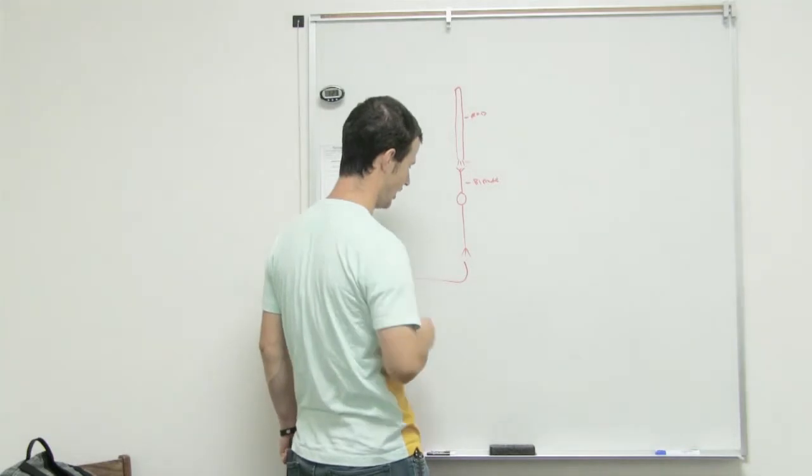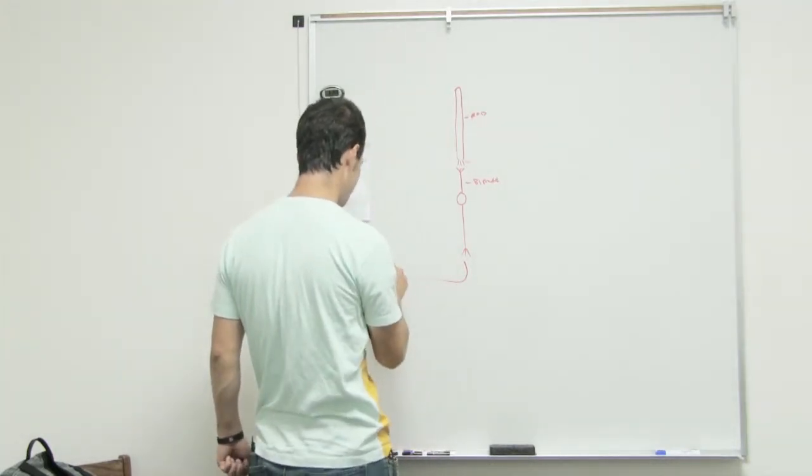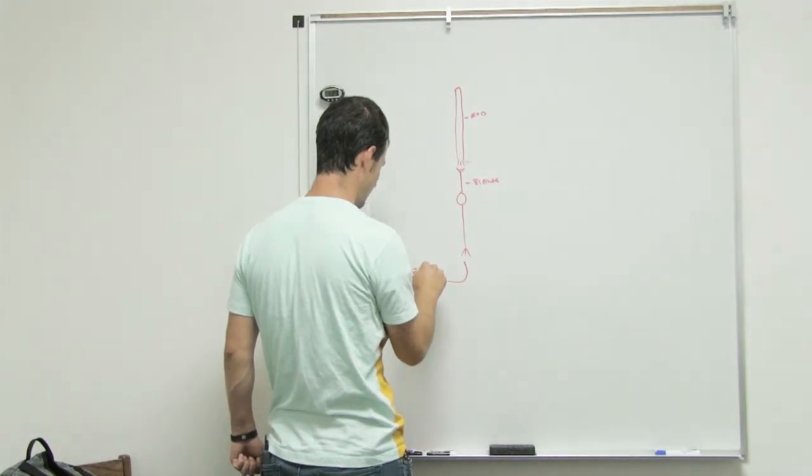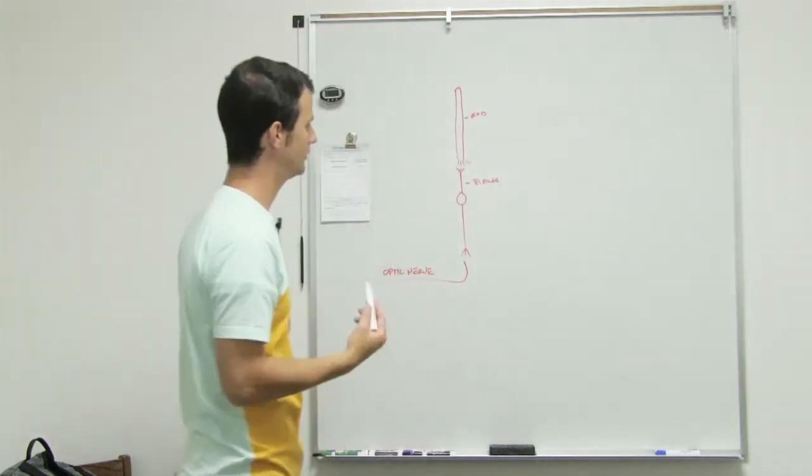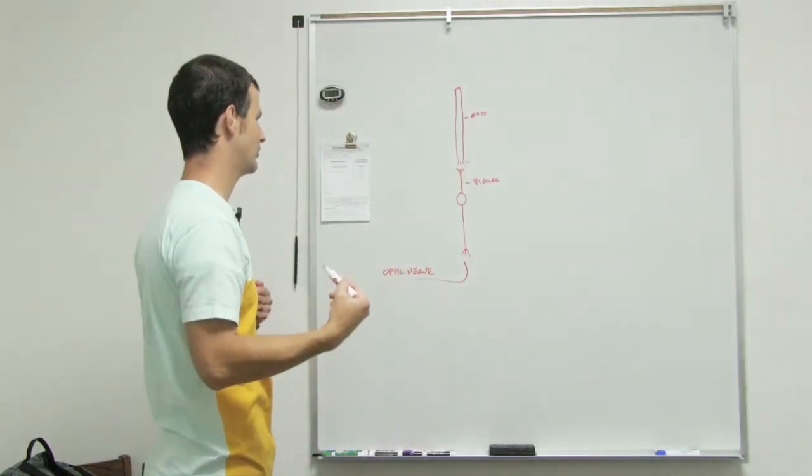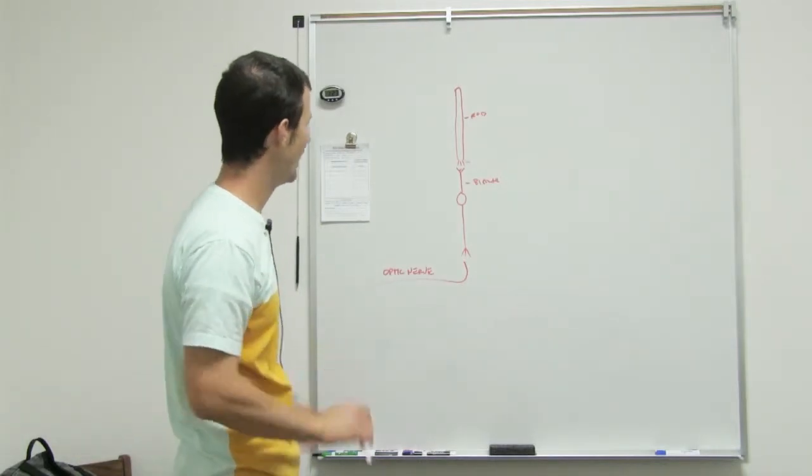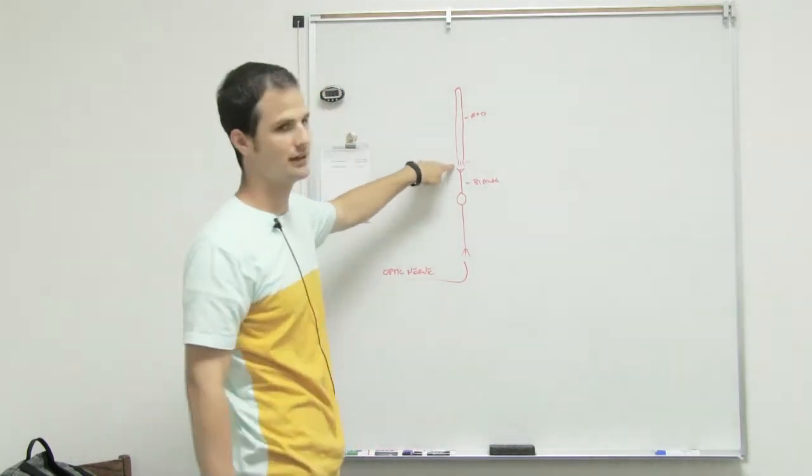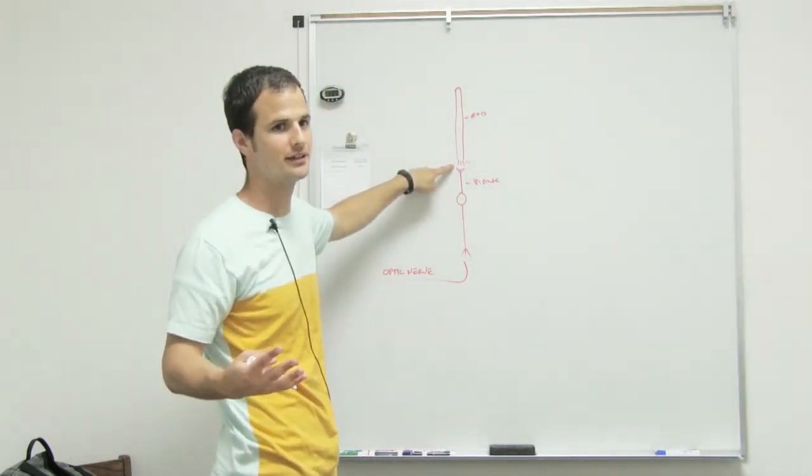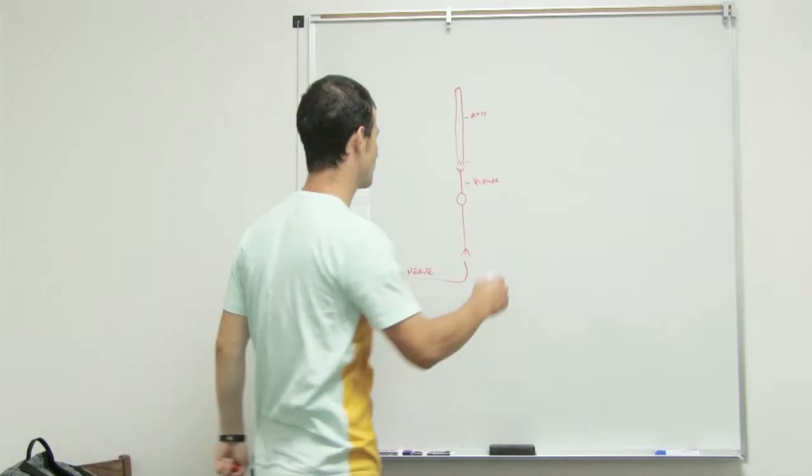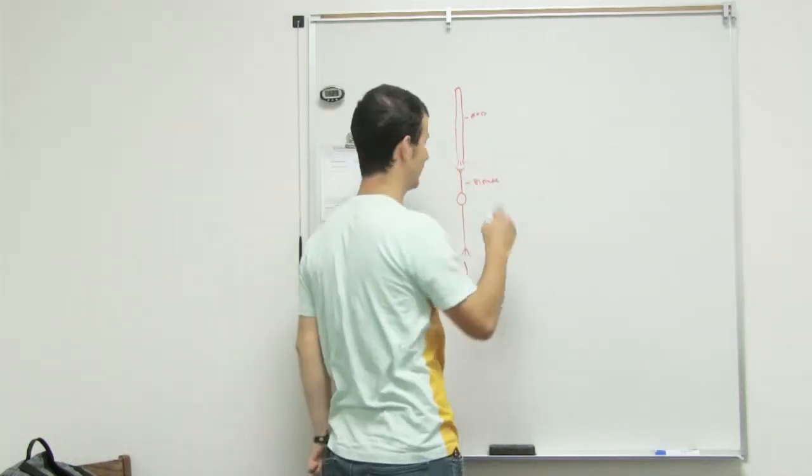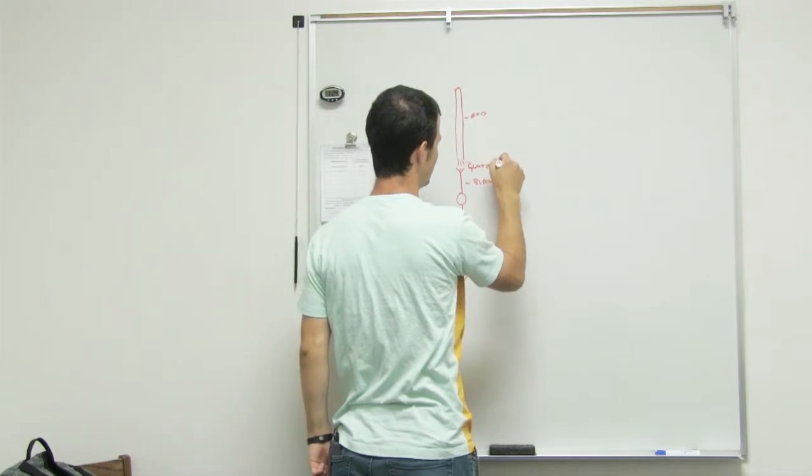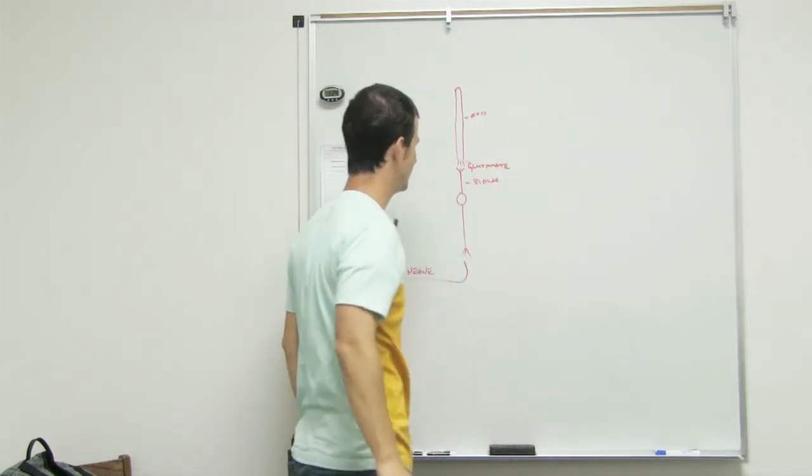say this is like the optic nerve, right. So this kind of works the opposite way of what you'd think. At rest, when the rod is not stimulated, it is actually sending a neurotransmitter called glutamate. So when it's not stimulated, it's constantly secreting glutamate, and what glutamate does is...